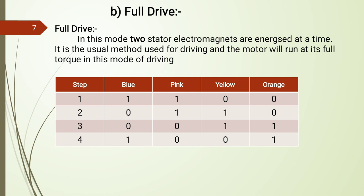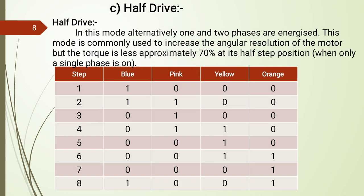In half drive, a mixing of the wave and full drive methods is used. Alternatively one and two phases are energized, achieving more accuracy in angular displacement of the stepper motor shaft. For step one, one winding (blue) is activated; step two, blue and pink; step three, pink only; step four, pink and yellow — and so on. A total of eight steps complete one cycle.